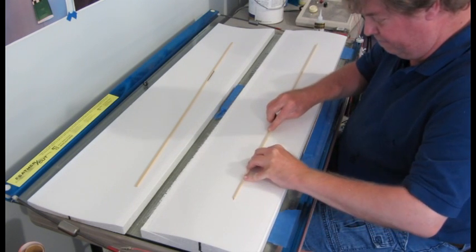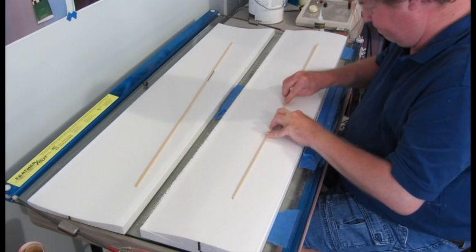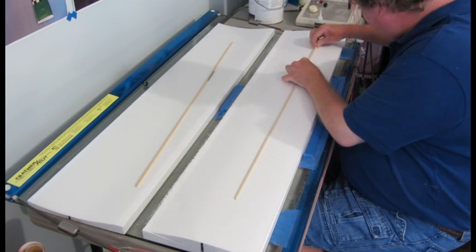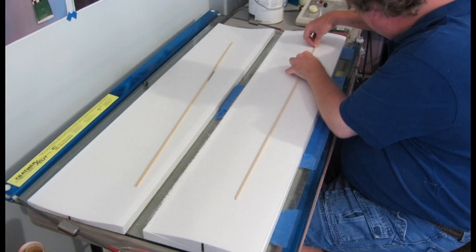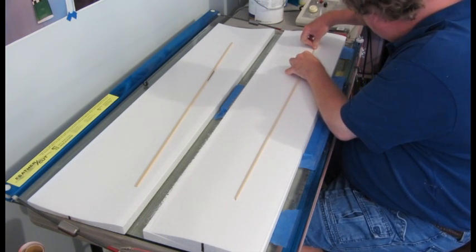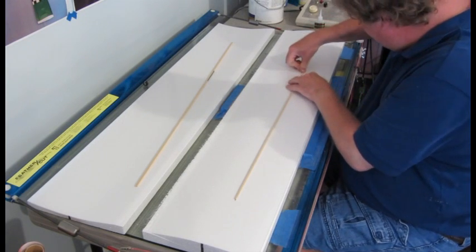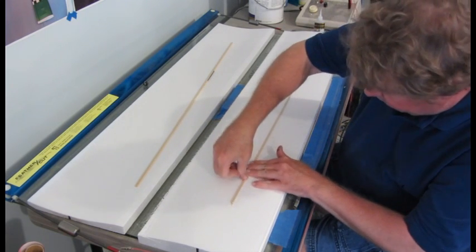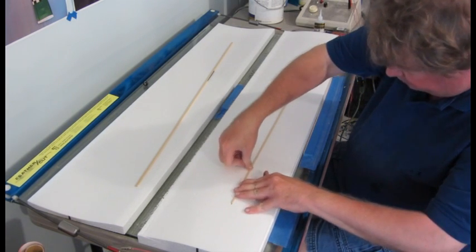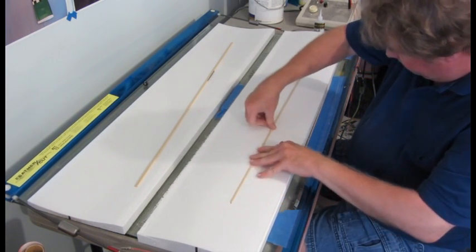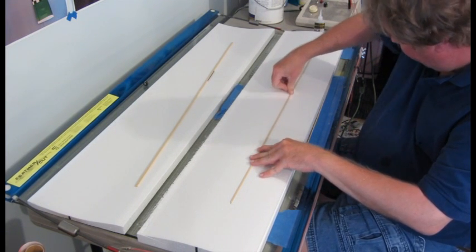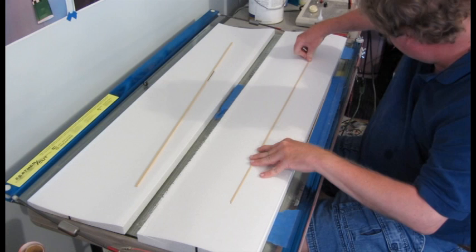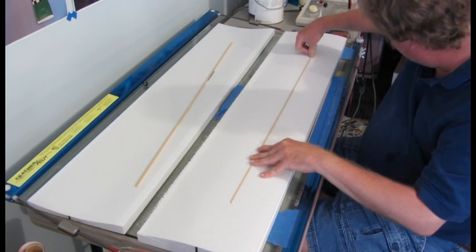Insert the stick into the slot. Use thumb pressure to get it pretty close to the surface. Don't want it to go below the surface because it's real important that this spruce spar be in contact with the carbon fiber strip that's going over the top of it, because it's the T that's formed with the carbon fiber strip and the wing skin that gives you the strength in the wing.